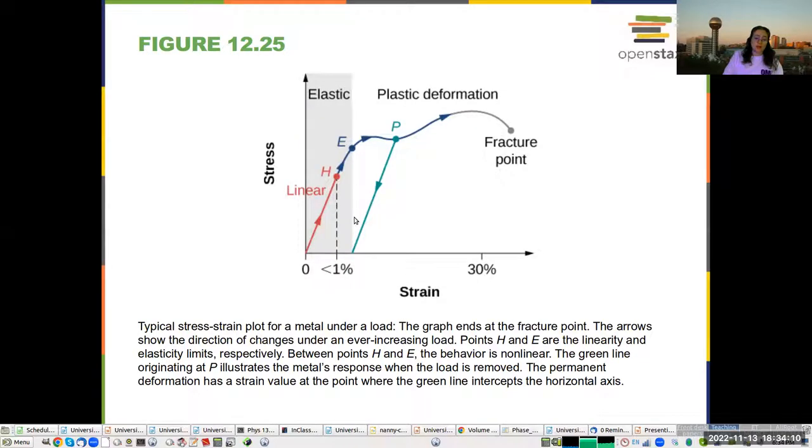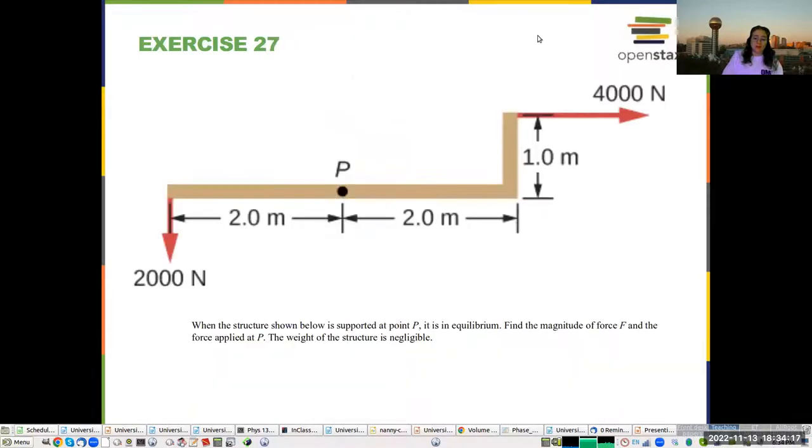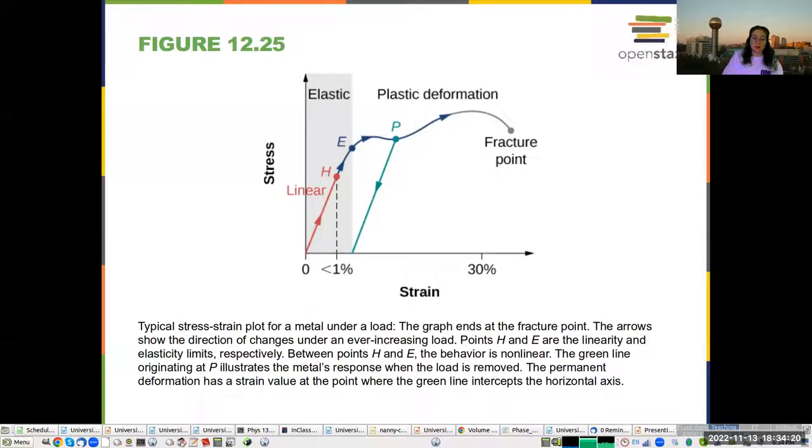So here you can see a stress strain plot from metal under a load, and the graph points to the fracture point. So the arrows show the direction of the changes in ever increasing load. And you have some linear limit where the stress is proportional to the strain, but at some point, the object becomes, the stress versus strain becomes non-linear until it eventually breaks.